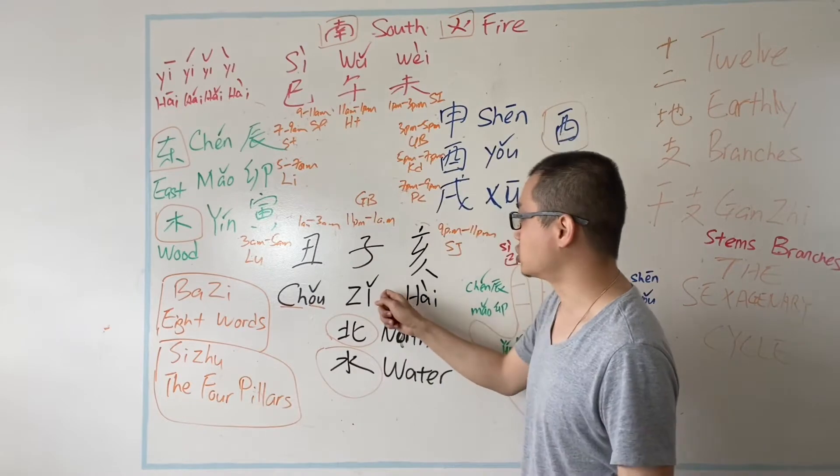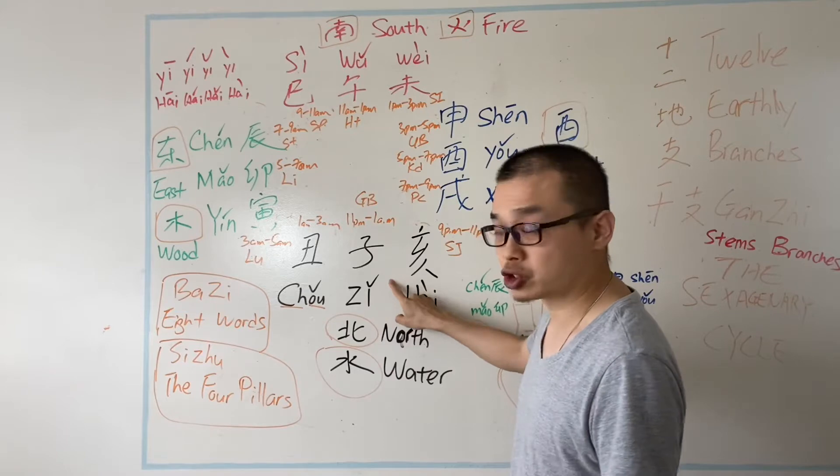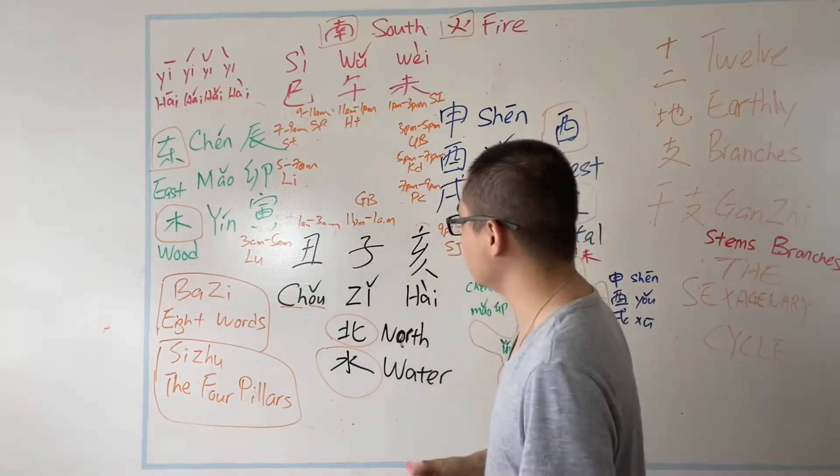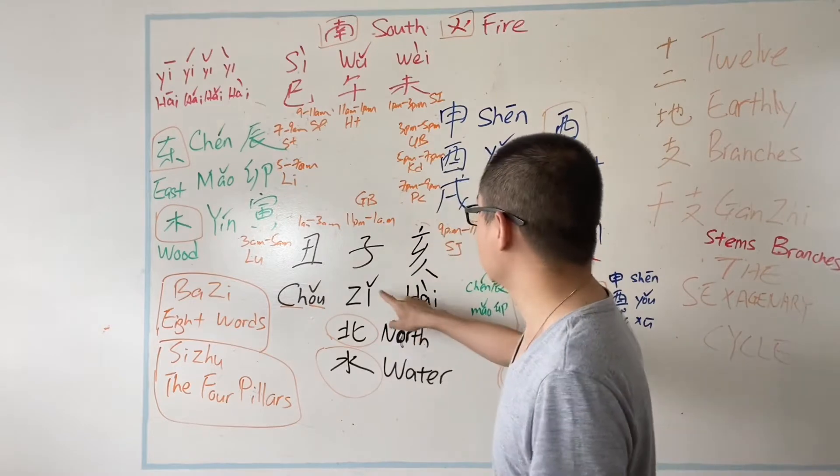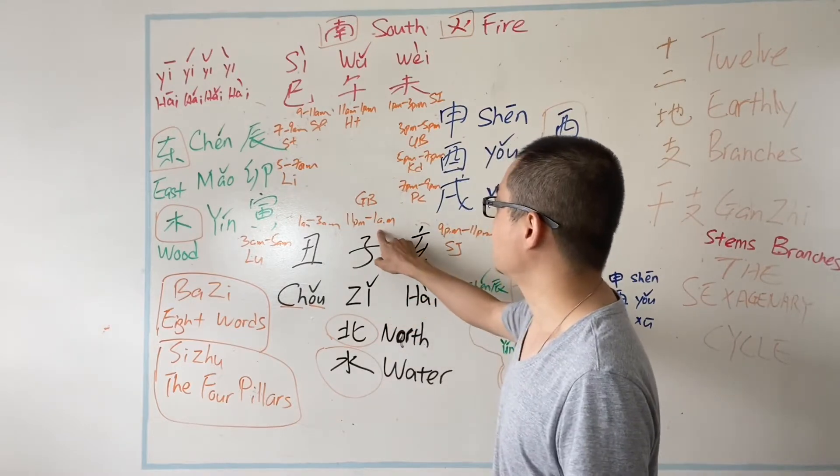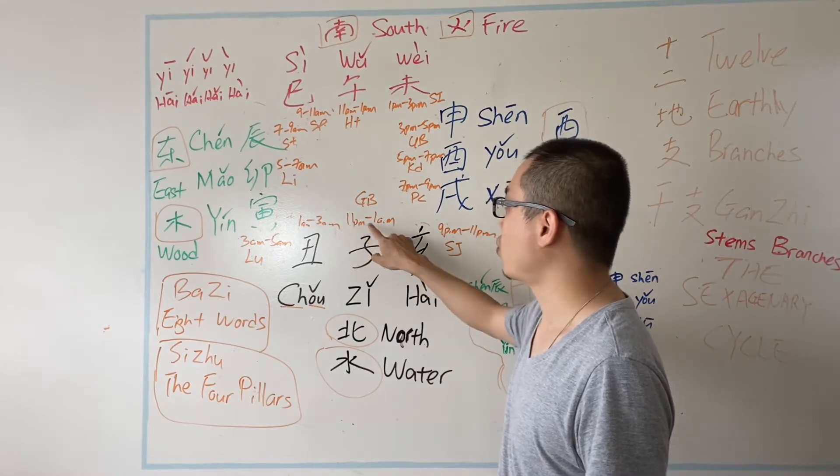Let's start with 子. We call 子时, which is the time that is controlling between 11pm to 1am.